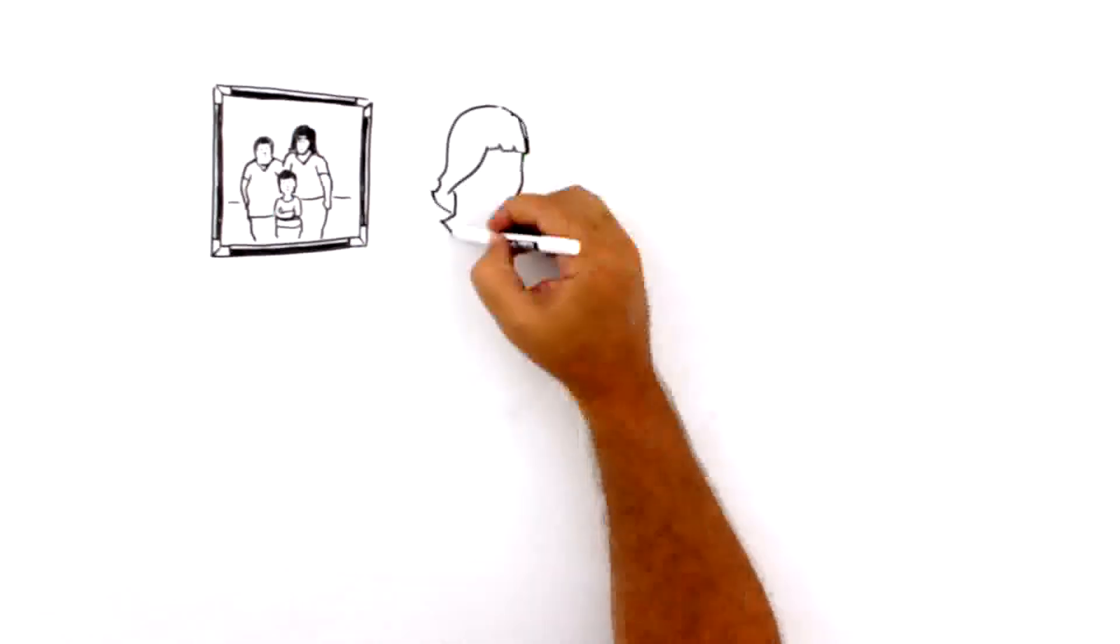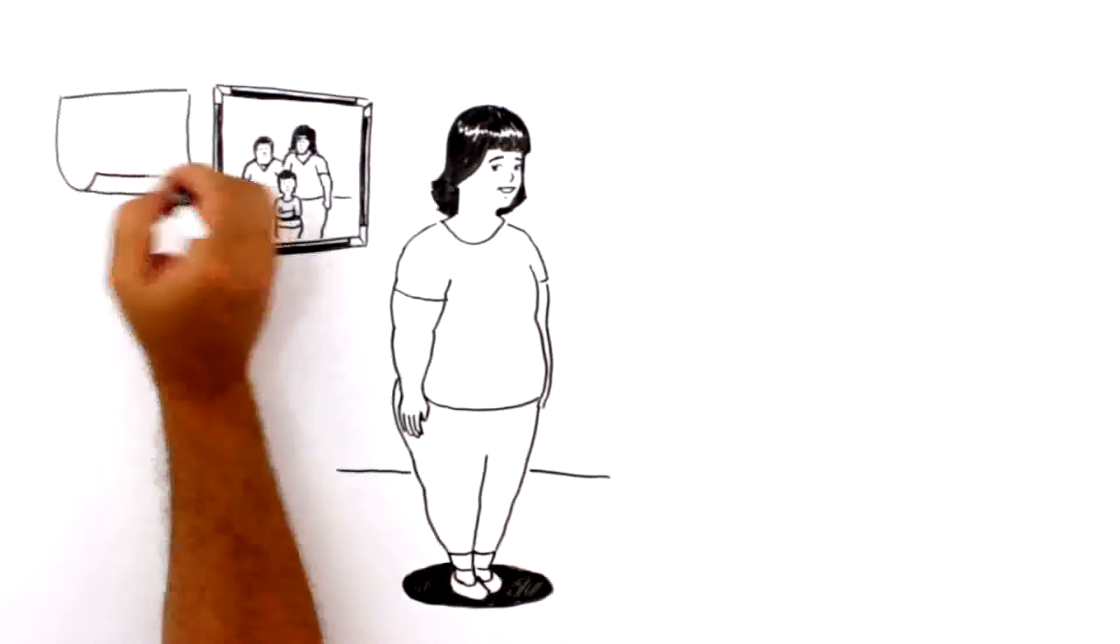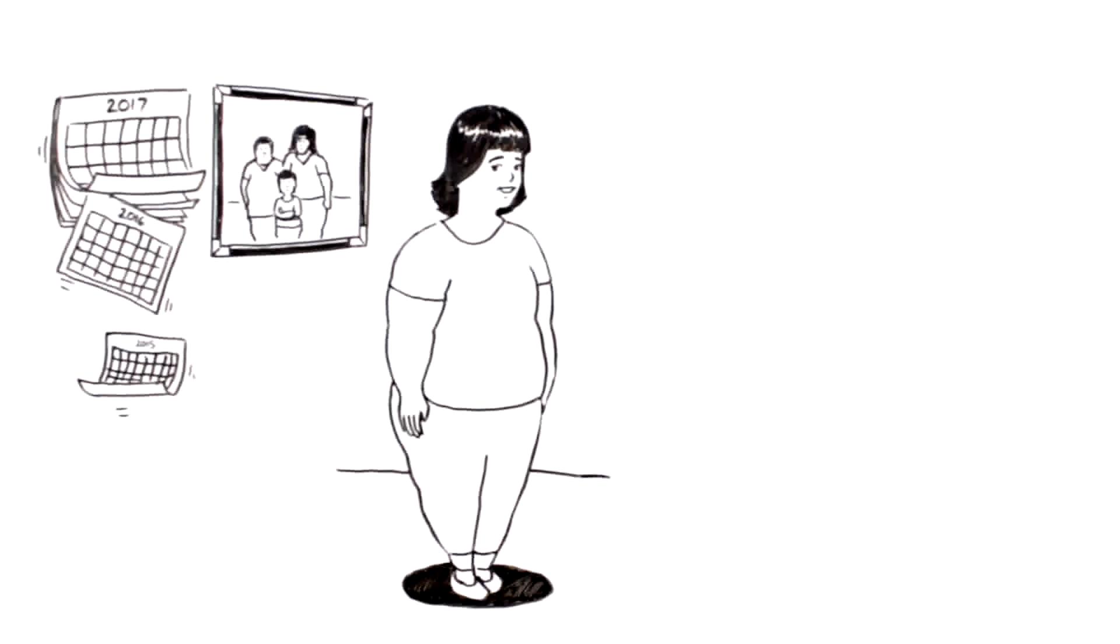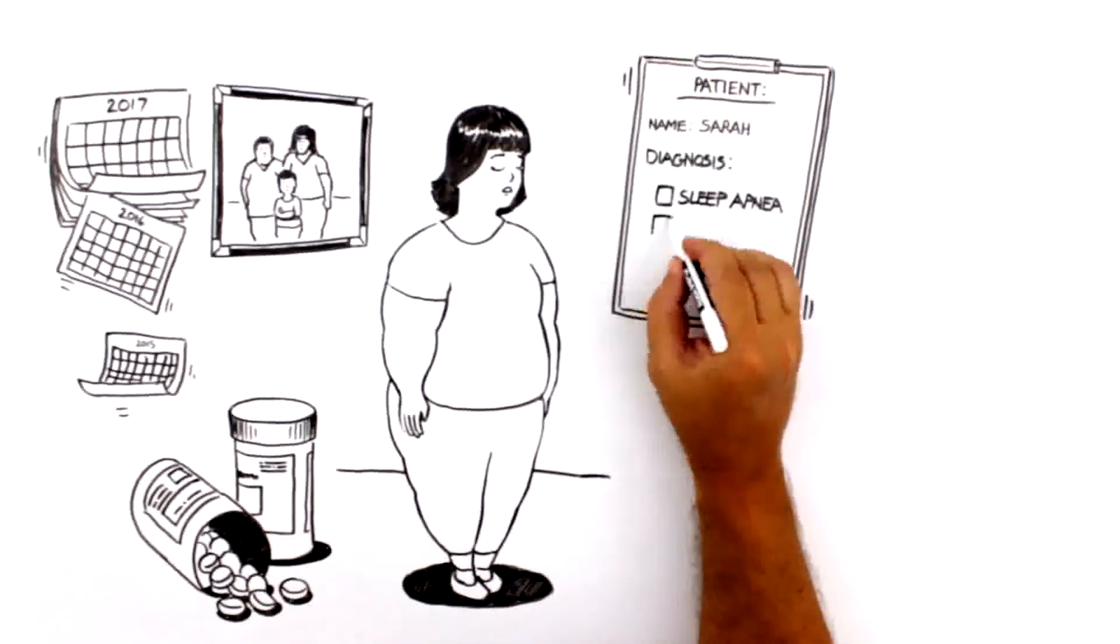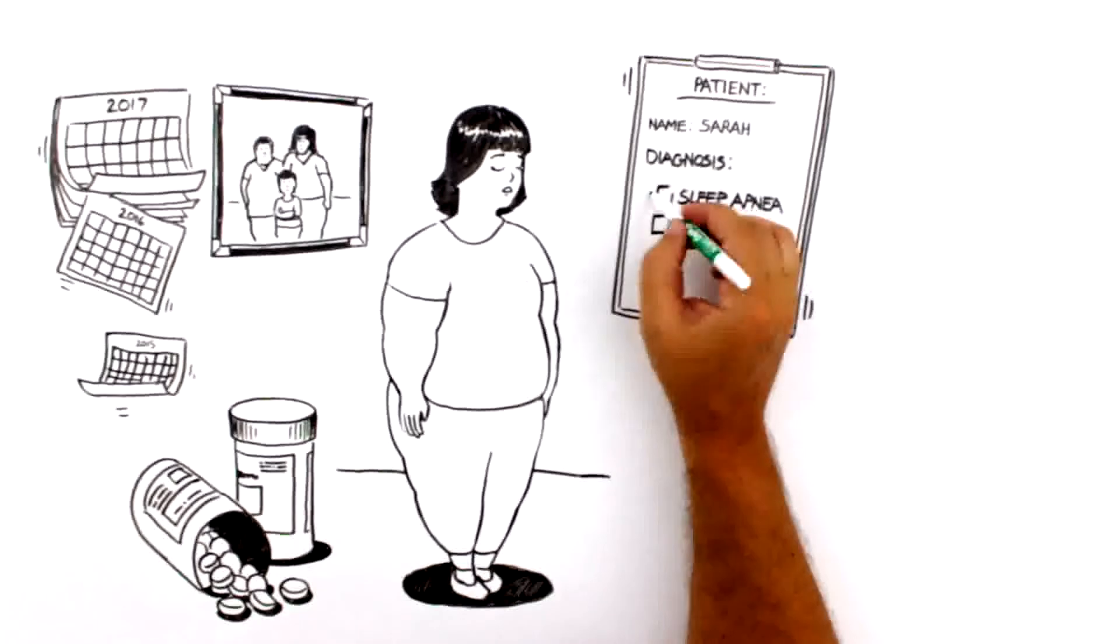Sarah's parents were heavy, and she has always been bigger than her friends. But in the last few years, she has steadily gained weight despite her best efforts. She takes medicine for high blood pressure, was just diagnosed with sleep apnea, and her doctor told her she has pre-diabetes.